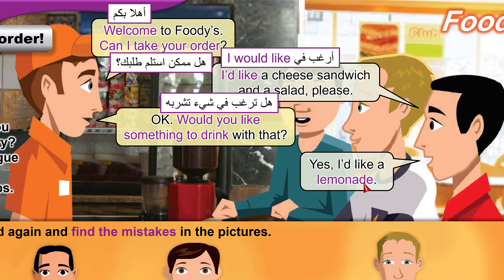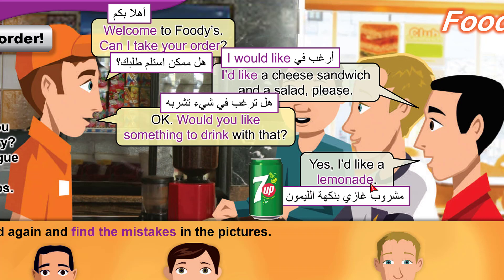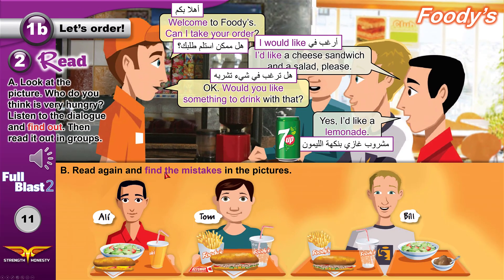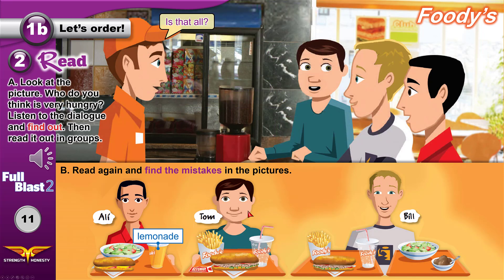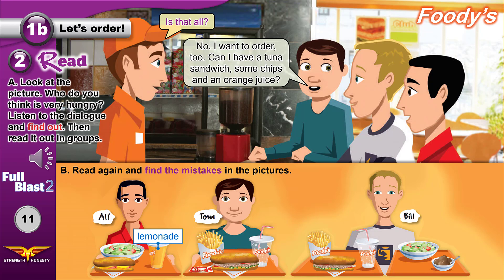In British English, lemonade is a sweet fizzy drink that tastes like lemon, like 7-Up. In American English, lemonade is just a lemon juice. So lemonade is a soft drink that tastes like lemon. Can you find the mistakes in Ali's order? He ordered lemonade, not orange juice. He ordered a cheese sandwich and salad, but he didn't order an orange juice. Tom: Is that all? No, I want to order too. Can I have a tuna sandwich, some chips, and an orange juice? Would you like some ketchup with your chips? No thanks.